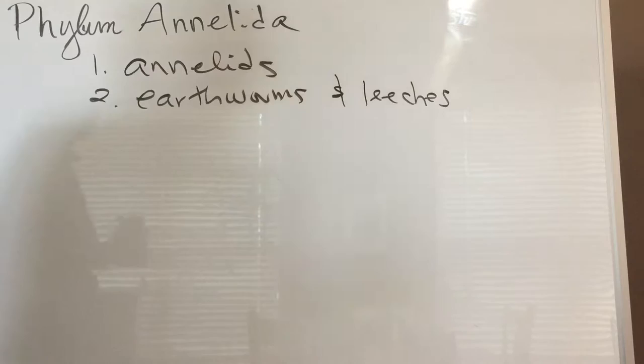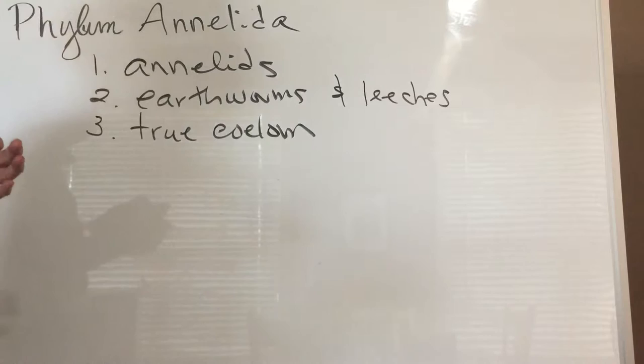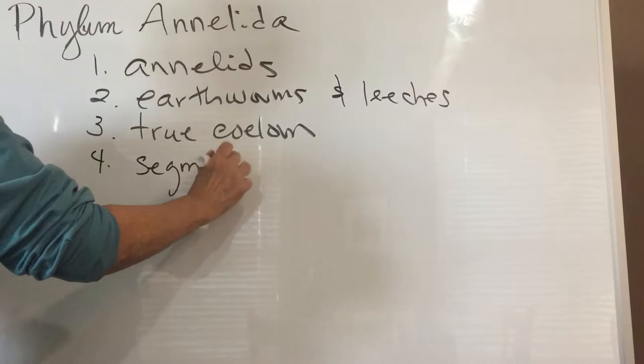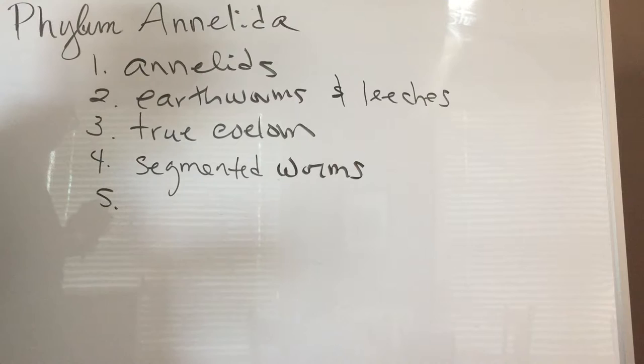Now this is actually the first group that has a true coelom, in that it has a cavity that's lined on both sides with mesoderm. These are segmented worms and they're believed because of that they share characteristics with the arthropods, and it's believed that they're rather closely related to those.